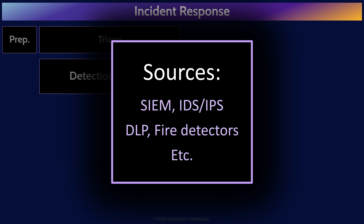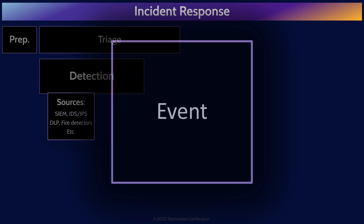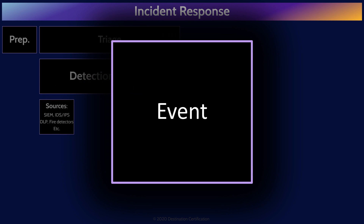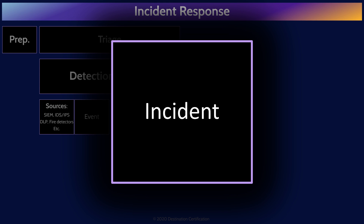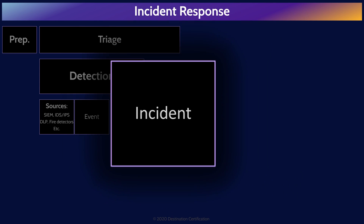We can use tools like intrusion detection systems which feed into our security information and event management systems, or building monitoring systems like fire alarms, or a report from an employee, among many other ways. And remember the difference between an event, which is an observable occurrence, and an incident, which is an event that has a negative impact on the organization.